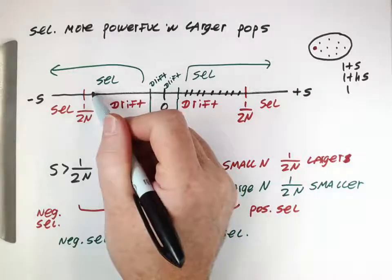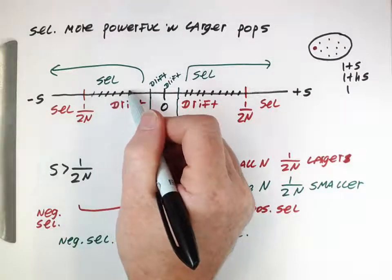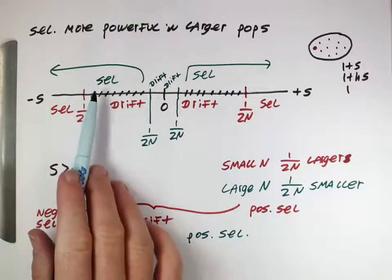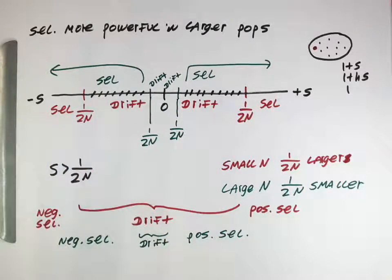Similarly, these slightly deleterious mutations, in a small population, are not selected against. They can fix by random chance and by drift, and then they would actually make those individuals in the future worse because the whole population would have them. Whereas a larger population can effectively select against them and prevent them from fixing.